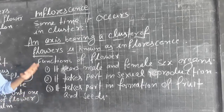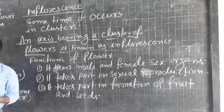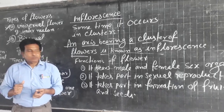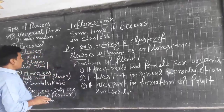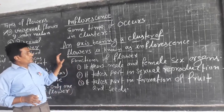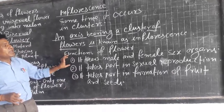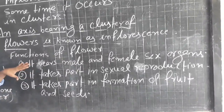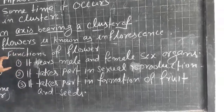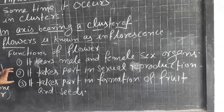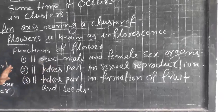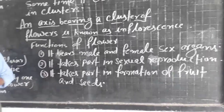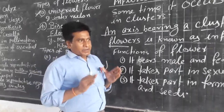Overall, the function of a flower: a flower is the reproductive organ of a plant. The first function is that it bears male and female sex organs for sexual reproduction. The second function is that it takes part in sexual reproduction. The third function is that it takes part in the formation of fruits and seeds.